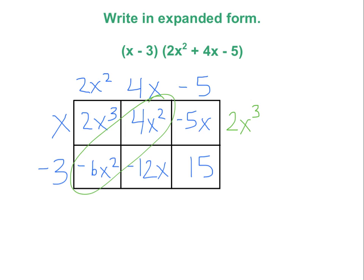I will combine that diagonal, negative 6x squared, and a 4x squared would be negative 2x squared. Negative 12x and negative 5x is negative 17x, and then I just have the 15. So this is my expanded form of the expressions.